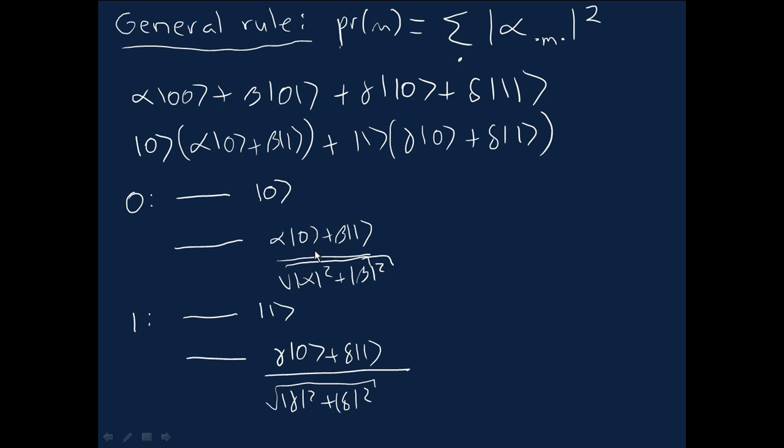That's the general rule that we use to do a partial measurement on a two-qubit system. You can also easily see how these results generalize to systems containing larger numbers of qubits. I've already described how the probabilistic rule generalizes, but you can also see how the posterior state rule generalizes in a very similar way when we have just a few of the many qubits being measured.